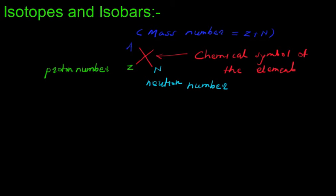Before giving the idea about isotopes and isobars, let me give information about the nuclear notation of an element. Here, X represents the chemical symbol of the element, Z represents the number of protons and is written at the bottom left side, N represents the neutron number, and A, written at the top left side, is the atomic mass of the element. The atomic mass is the addition of the proton number and the neutron number.